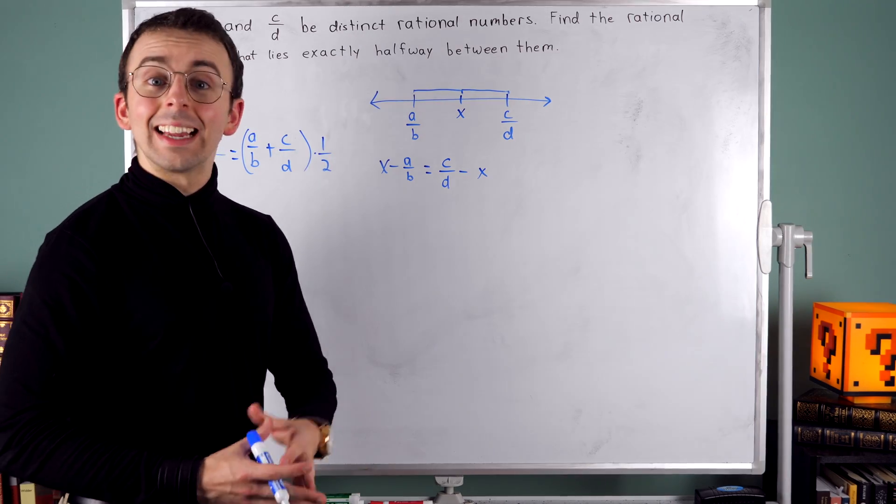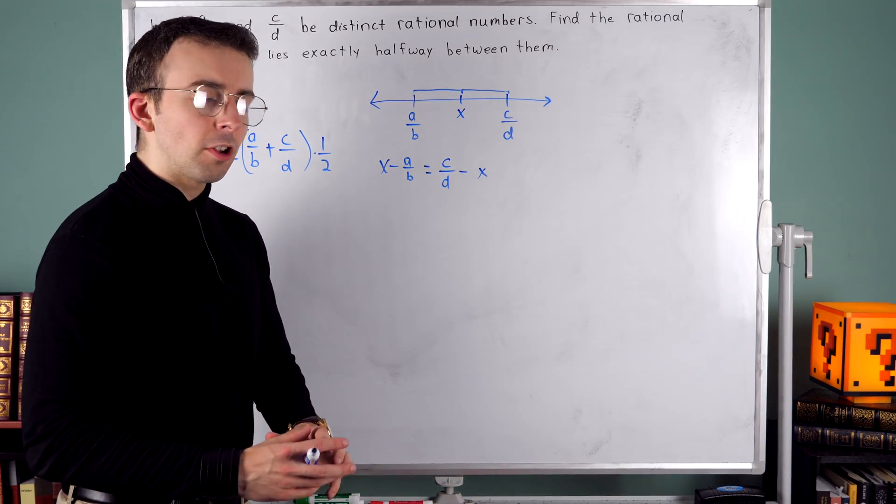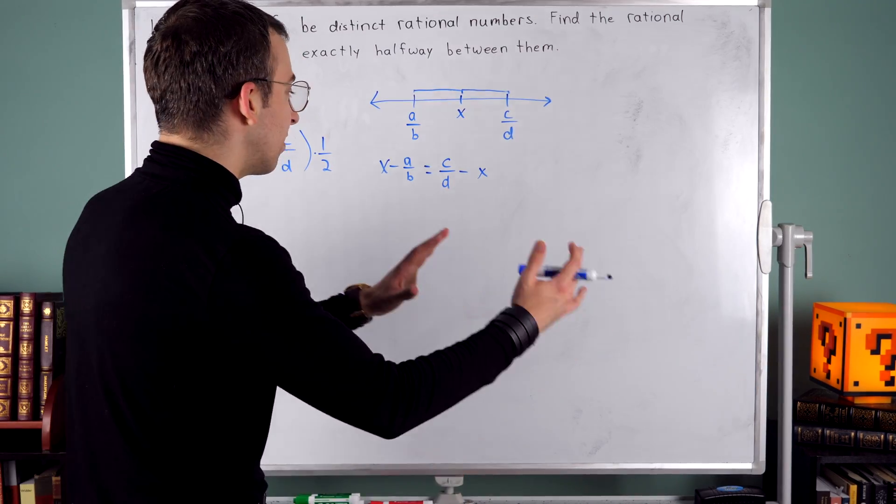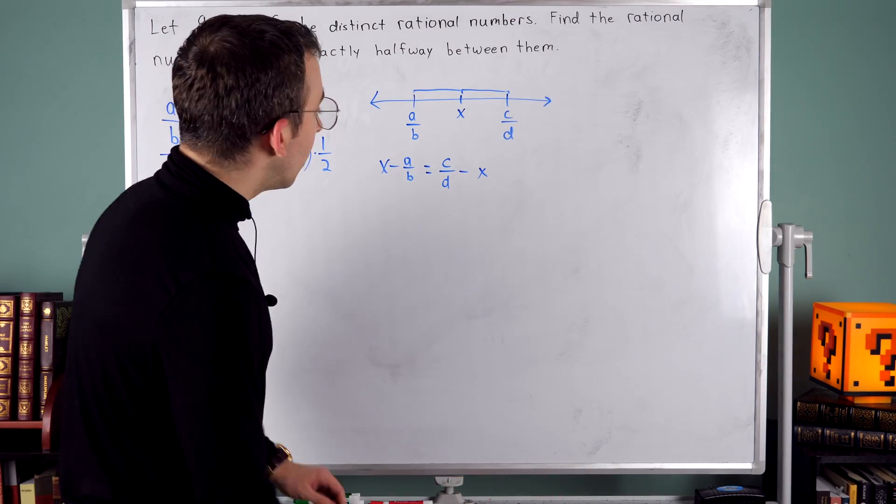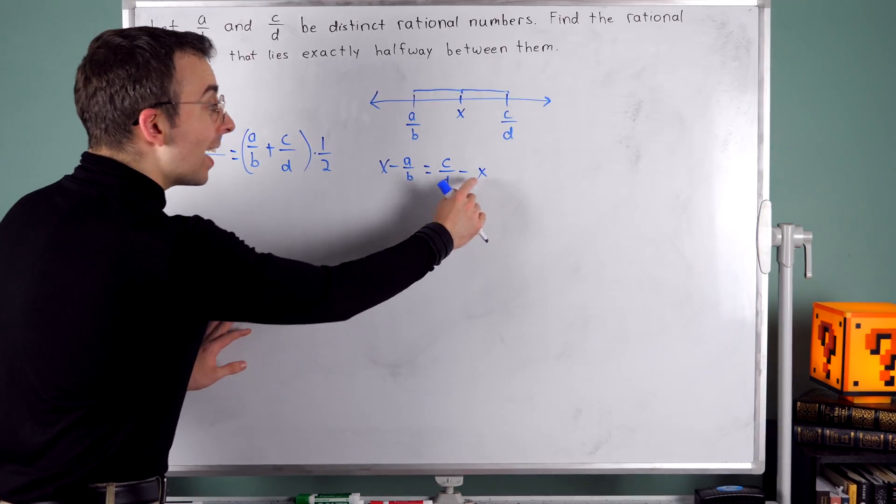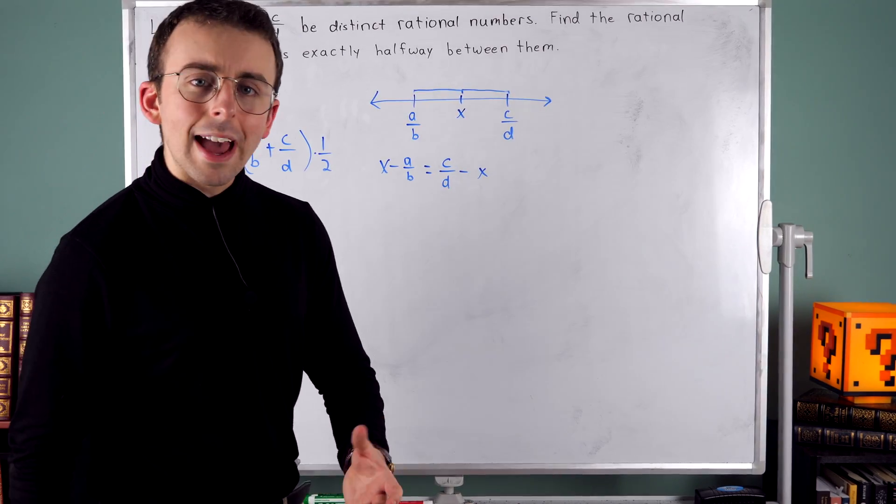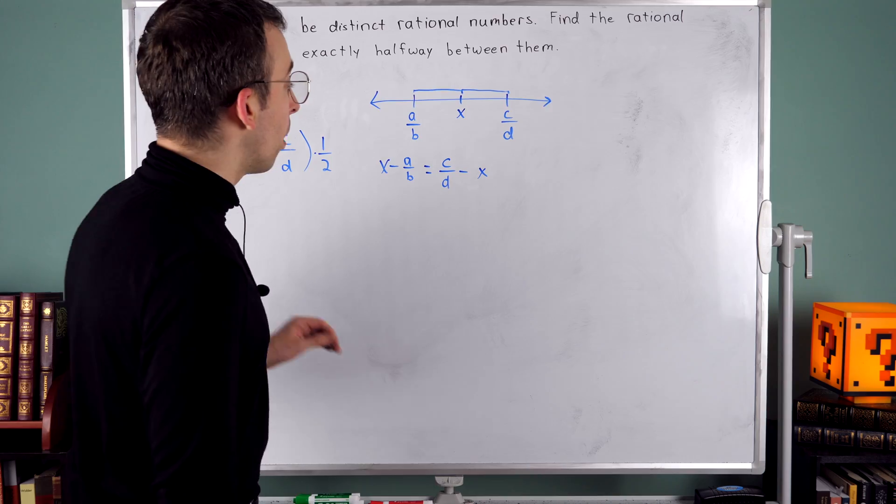In order to solve for x, I need to get x by itself. So I've got to collect all my x's on one side of the equation. Let's bring them all to the left. Over here on the right, I have a minus x. So to get rid of that, I'm going to add x to both sides.